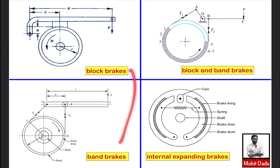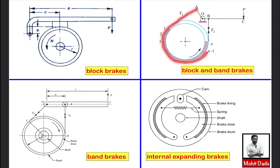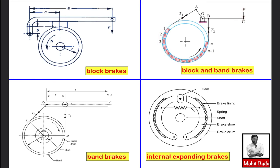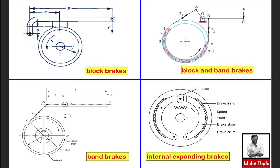The third type is a combination of block and band brakes. Here, over the brake drum or rotating body, a number of blocks of material are arranged, and bands run over the surface of these blocks. The bands are attached, and frictional contact is controlled with the help of a lever. The fourth type is the internal expanding brake, where frictional contact is made by moving friction lining outward onto the inner surface of the brake drum.